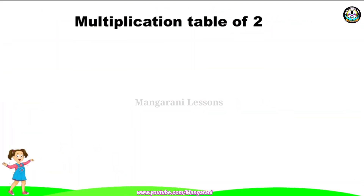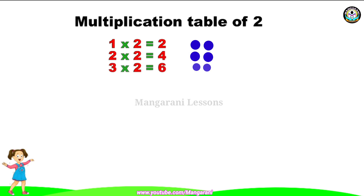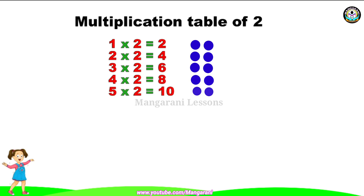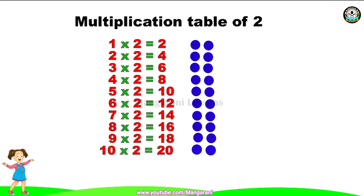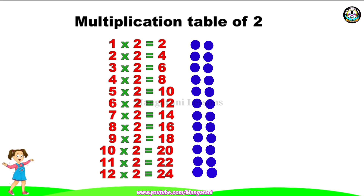Multiplication table of two. One twos are two, two twos are four, three twos are six, four twos are eight, five twos are ten, six twos are twelve, seven twos are fourteen, eight twos are sixteen, nine twos are eighteen, ten twos are twenty, eleven twos are twenty-two, twelve twos are twenty-four.